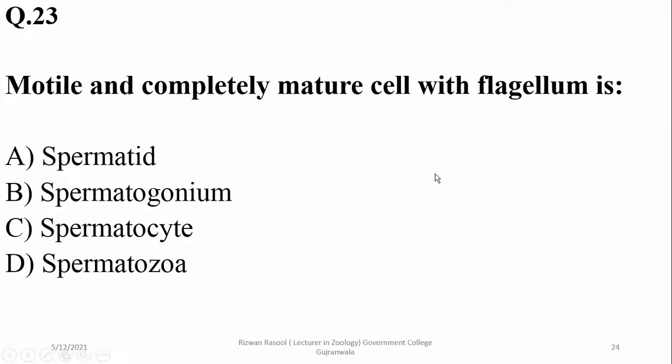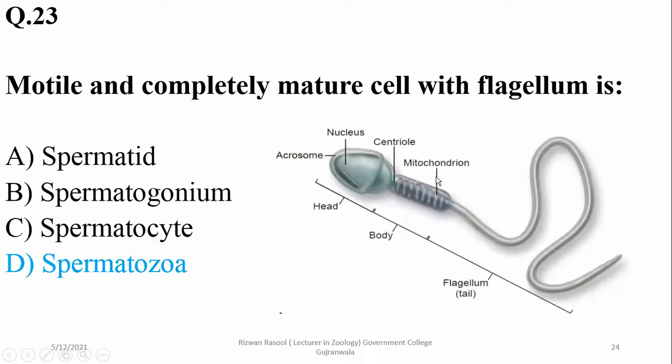Question number twenty-three: motile, completely mature cells with a flagellum are known as spermatozoa, or sperm.